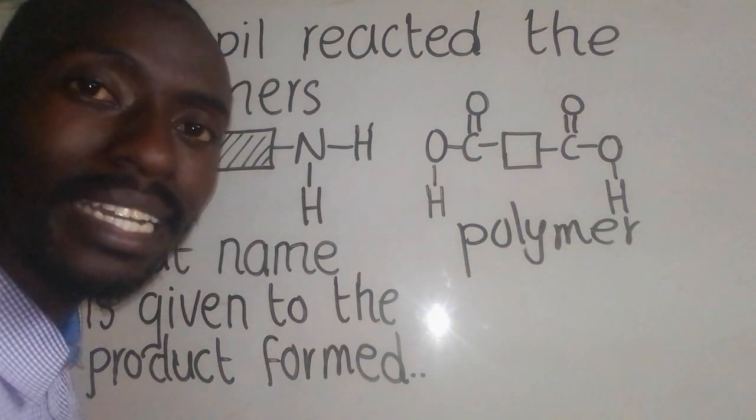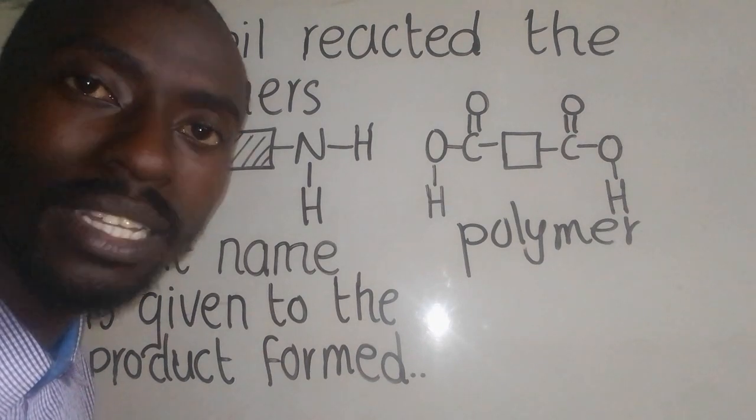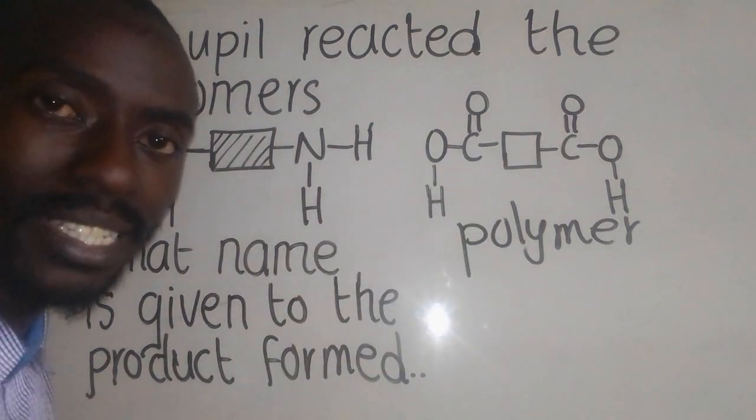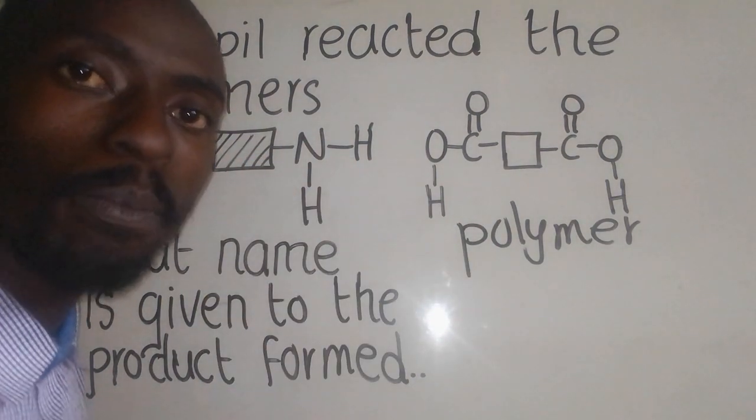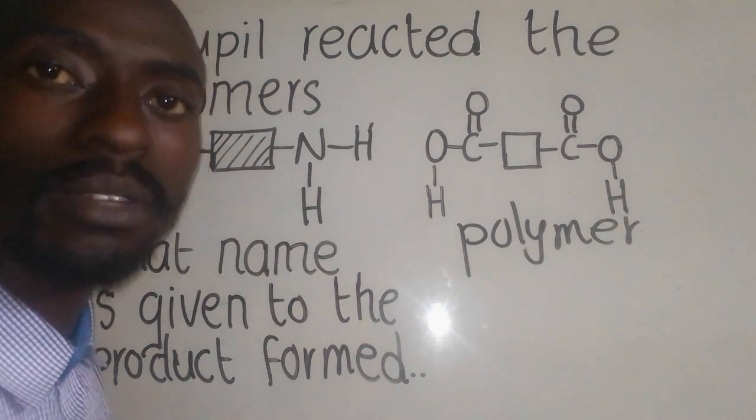Now a polymer is a giant molecule formed by the combination of whole smaller units known as the monomers. These are some of the examples of monomers. We have two types of polymers: we have addition polymer and condensation polymer.